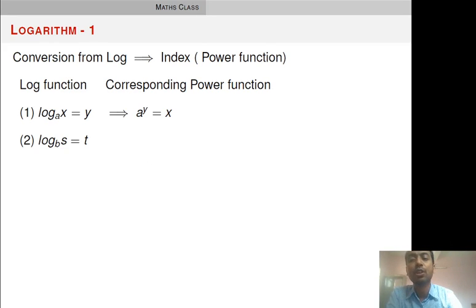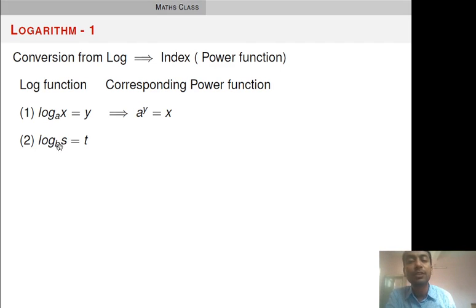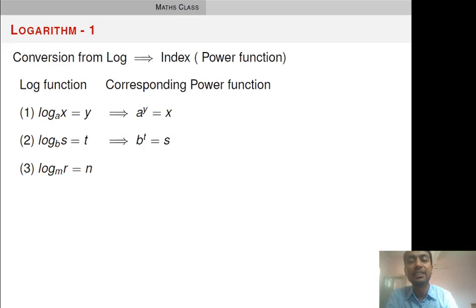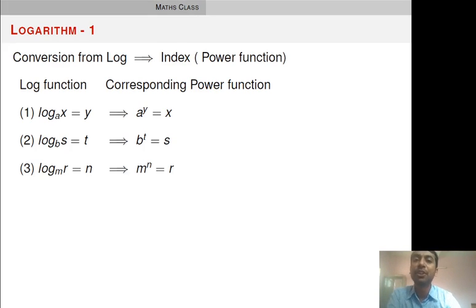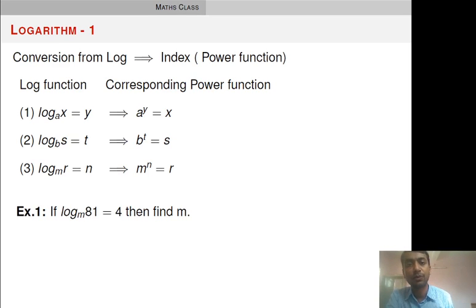Let us see another example. Log S base B is equal to T. We want to convert this into power function. The same process applies: base of the log function is B, so when converting, base remains B, and the other two interchange their positions. Similarly, for log R base M equal to N, it will be M raised to N is equal to R.